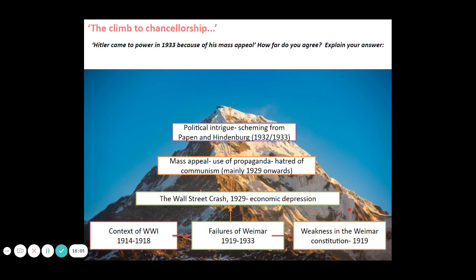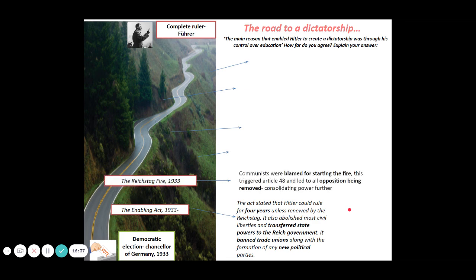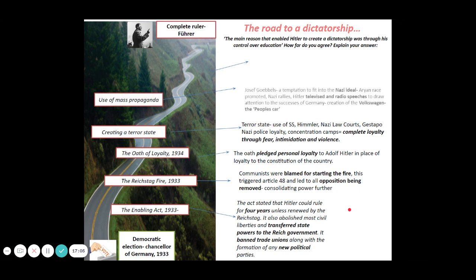And then there was political intrigue — Hitler was great at negotiating the political system. The scheming between Papen and Hindenburg allows Hitler to claw his way to the top, and by 1933 he can become not just chancellor, but unite the roles of chancellor and president to become the Führer — a title of his own making. The Enabling Act of 1933 gave Hitler power for four years to create new laws. This is after the Reichstag fire, which allowed him to remove opposition and consolidate his power further. We then get an oath of loyalty from the army, giving Hitler total military control, and then the creation of a terrorist state — particularly the use of his personal bodyguards the SS, Nazi law courts, the secret police, and concentration camps — all for fear and intimidation.